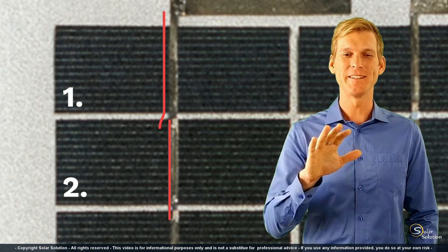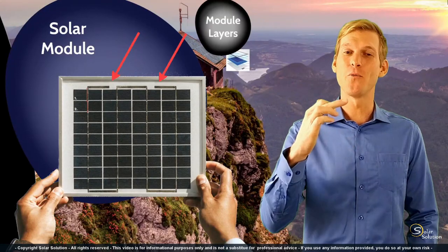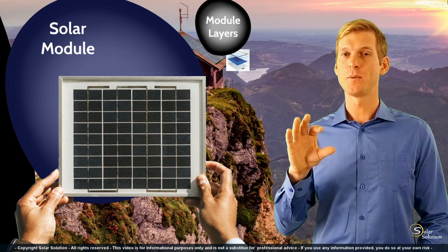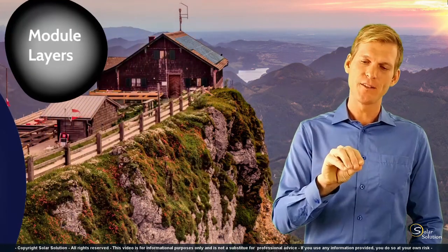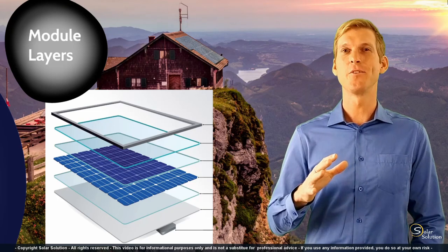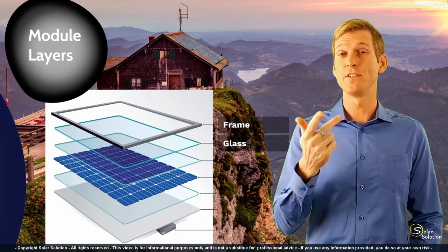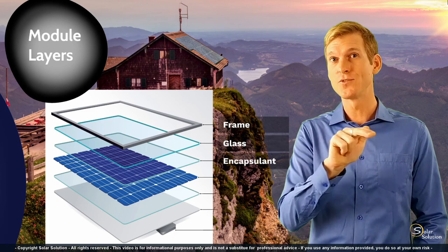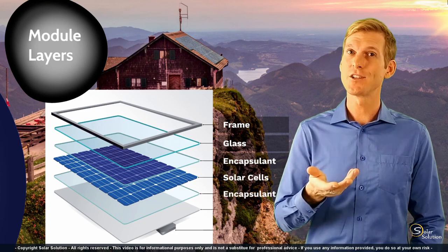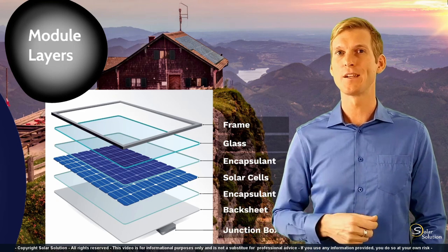Now you fully understand how the wiring runs throughout the solar module. Let's look at the basic layer components. Taking a theoretical solar panel and pulling all the layers apart: you have the frame, then the glass cover, the encapsulant, then the actual solar cells with all the wiring, then another encapsulant, the backing sheet, and on the very back the junction box, which is glued to the backing sheet.